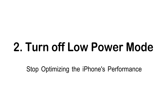Another important solution that has helped lots of iPhone users: Low Power Mode. When Low Power Mode is enabled and you try to send an image in the Messages app, it sends a blurry image. But when you keep it off, you get a high quality image on iMessage.